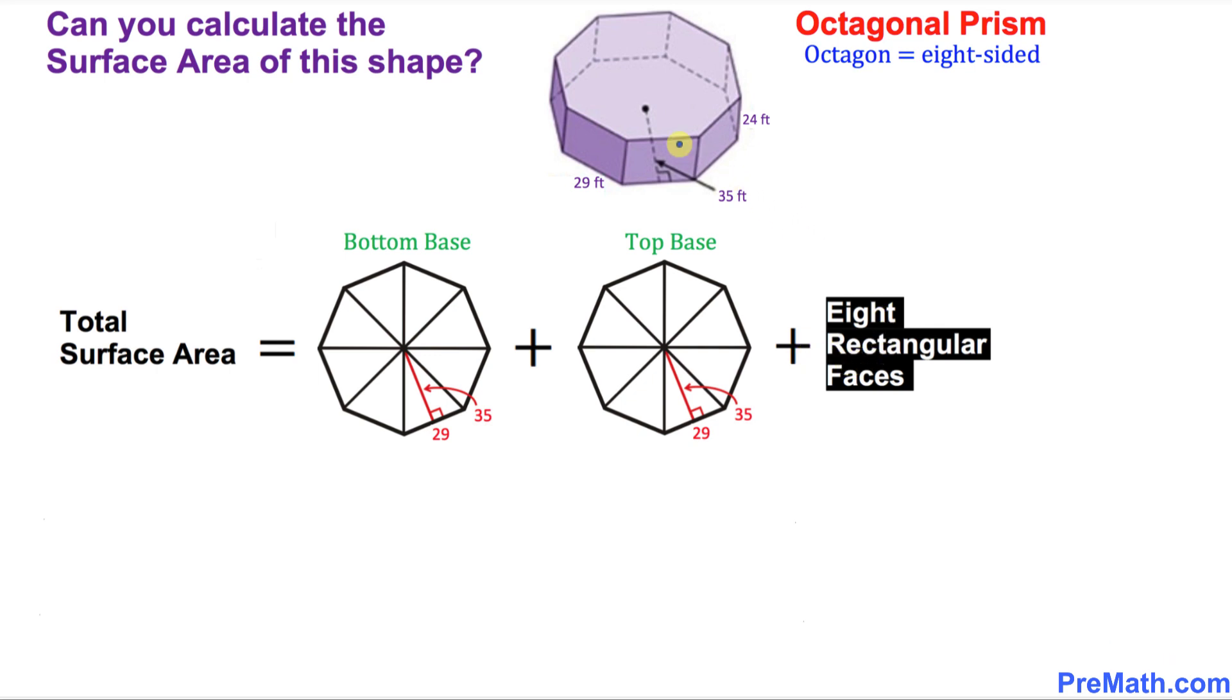And plus, how many sides do we have? We have eight rectangular faces. You can see, you can count them. There are eight of them. I just put it down over here. So this is the simple representation of this given shape.